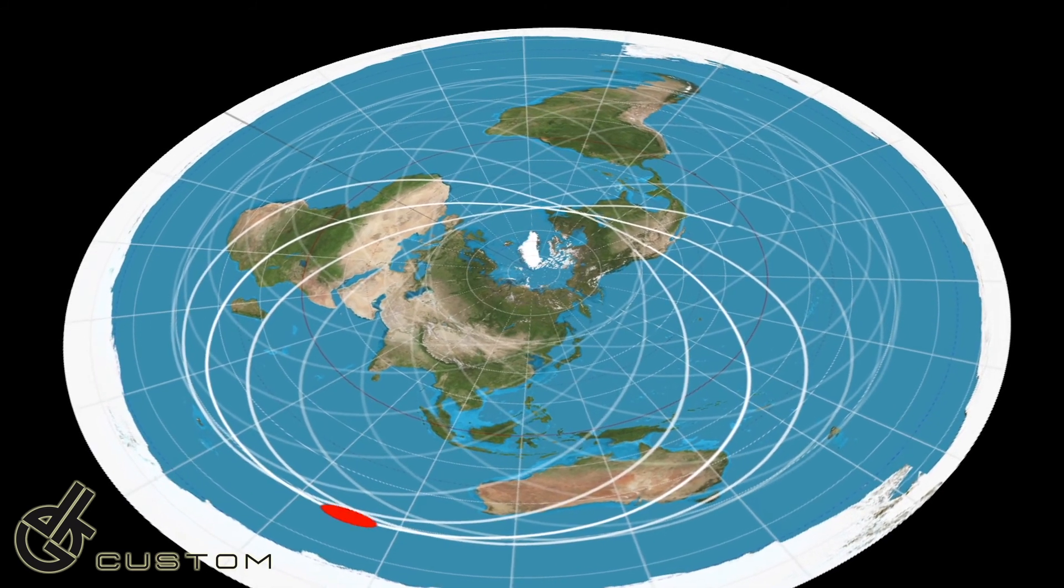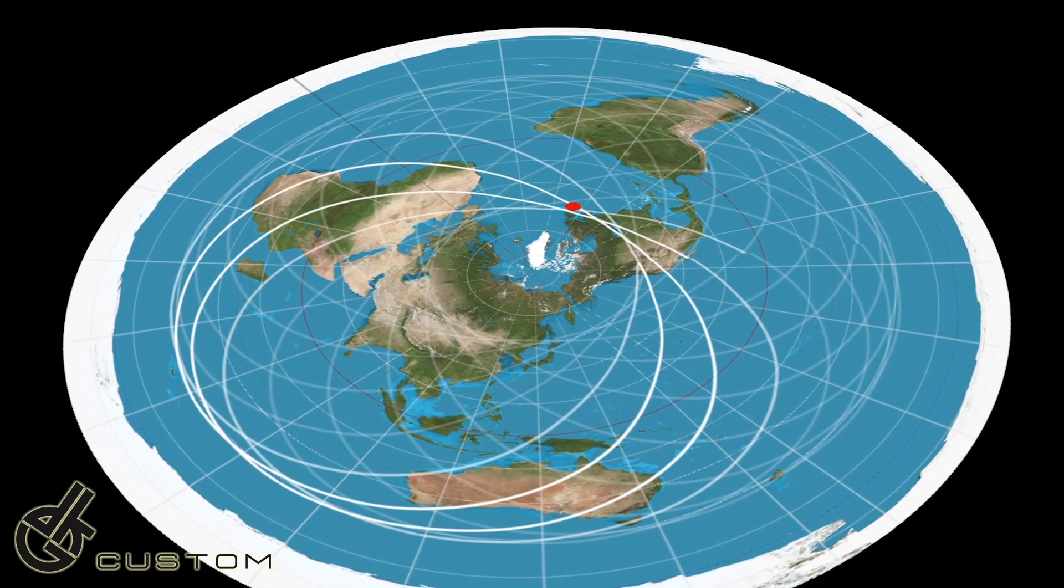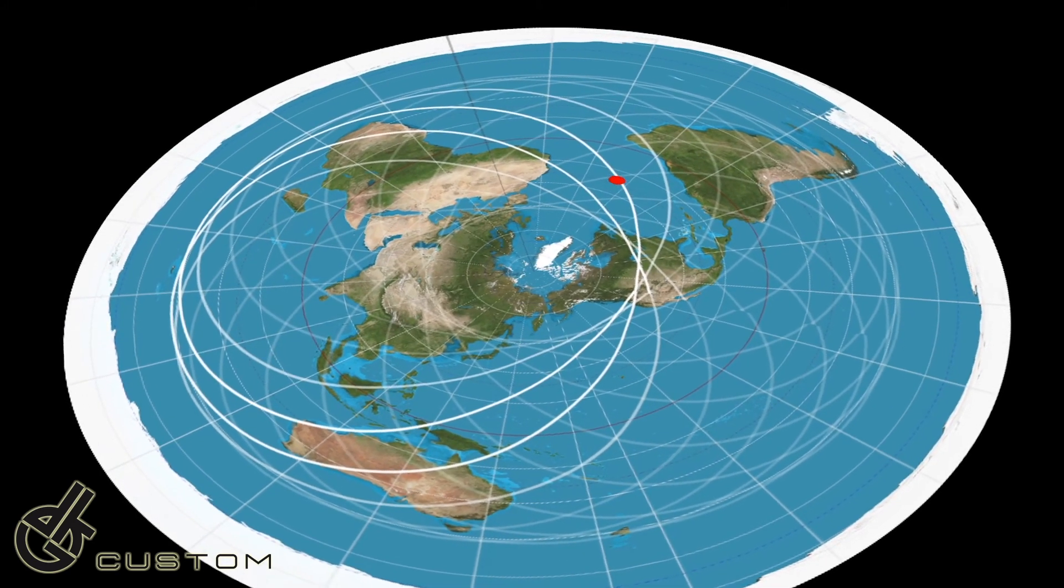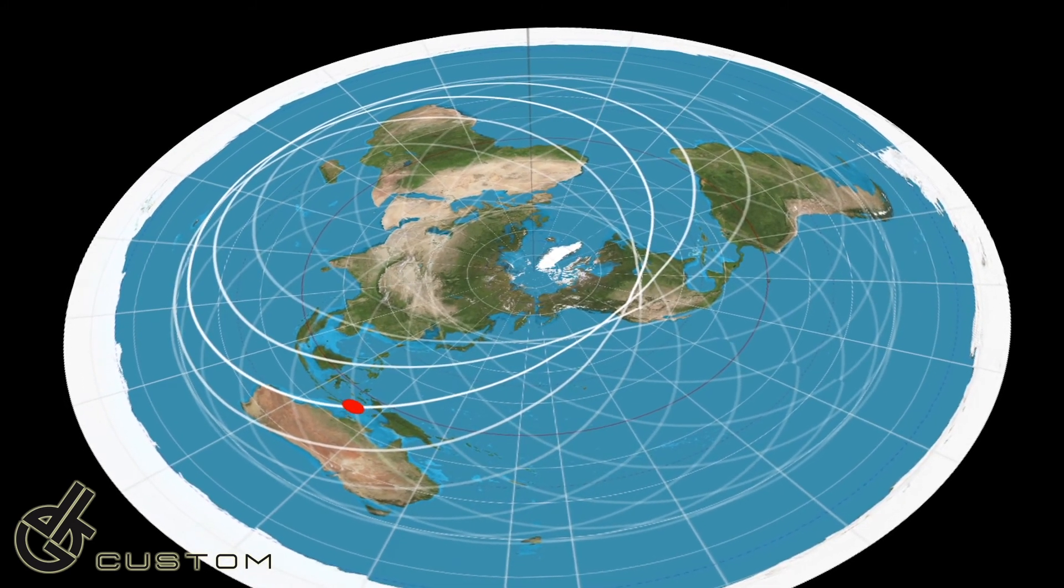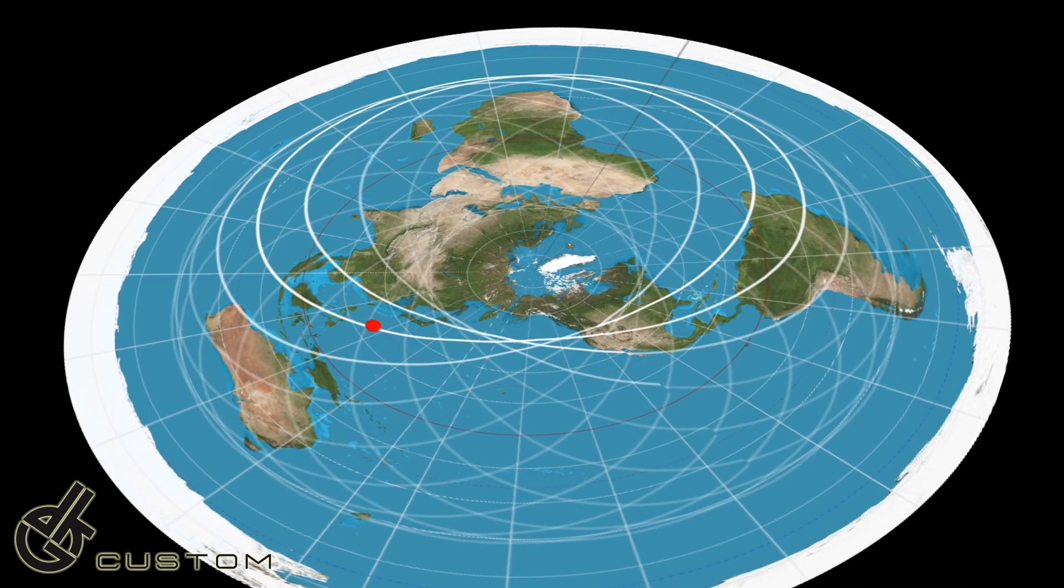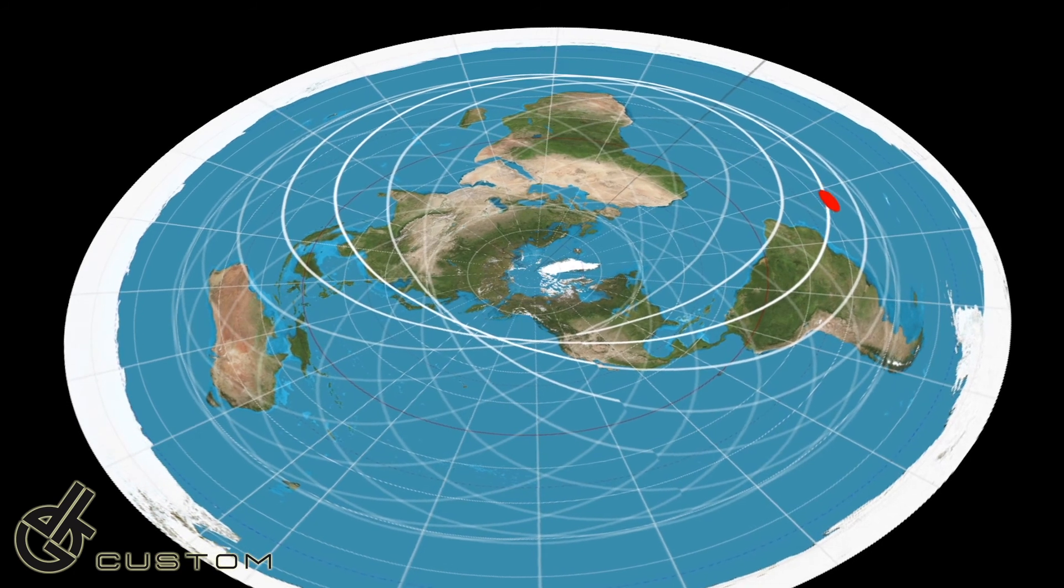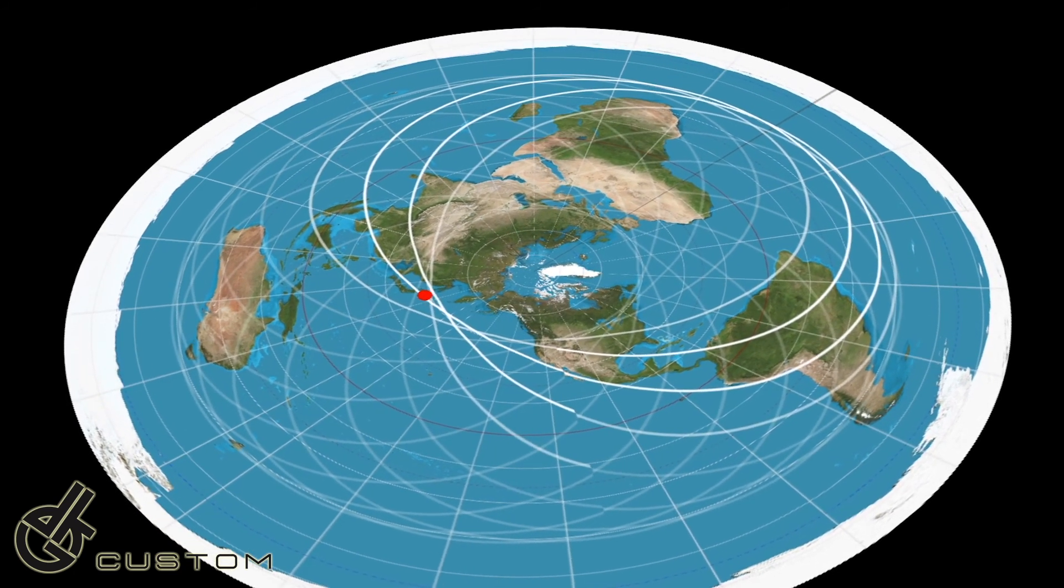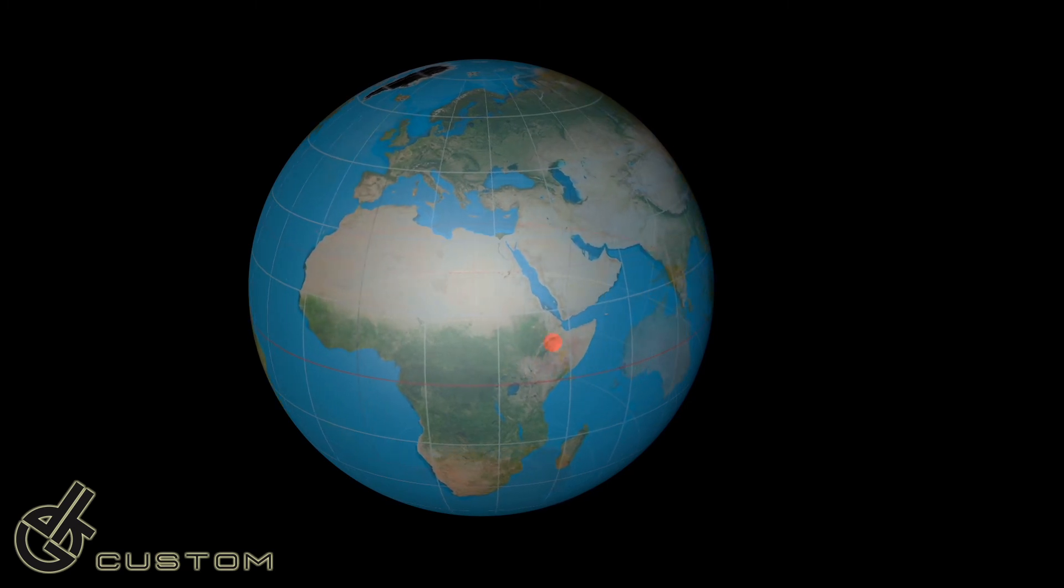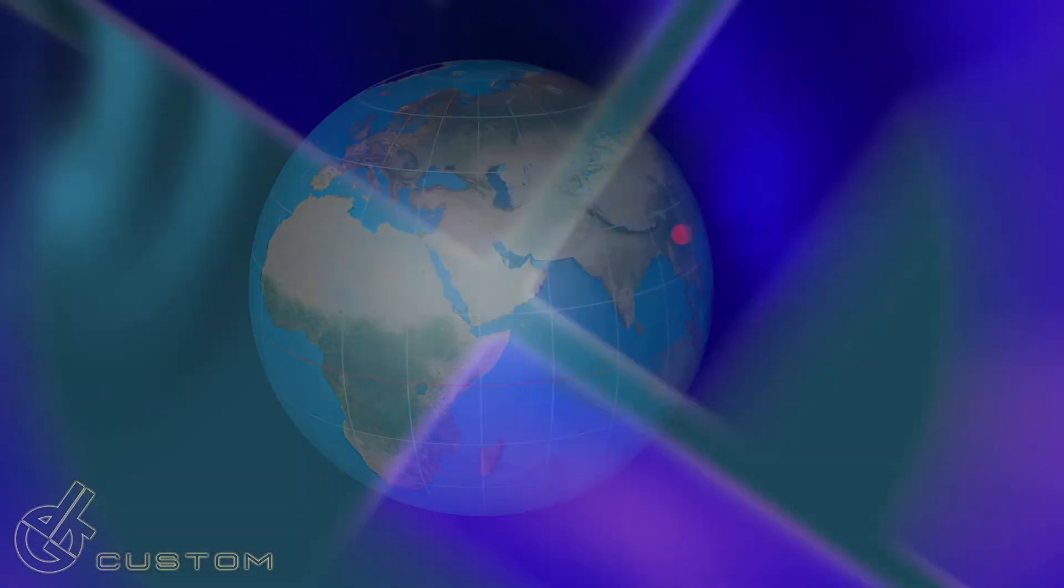So there you have it. For us, the ISS proves the earth is spinning and proves we cannot be on a flat earth model. The only way to make it work is to pull the drawstring around the edge of the flat earth tight. Oh, that will make a globe. Until next time, you buggers.